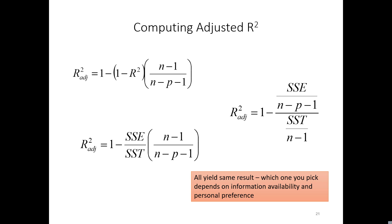All three formulas give you the same answer, so use whichever one works best for your situation. In an exam with Excel, you'd likely use the formula: adjusted R-squared equals one minus (SSE divided by SST), times (n minus one) divided by (n minus p minus one). Without Excel, the top-left formula is probably the easiest.